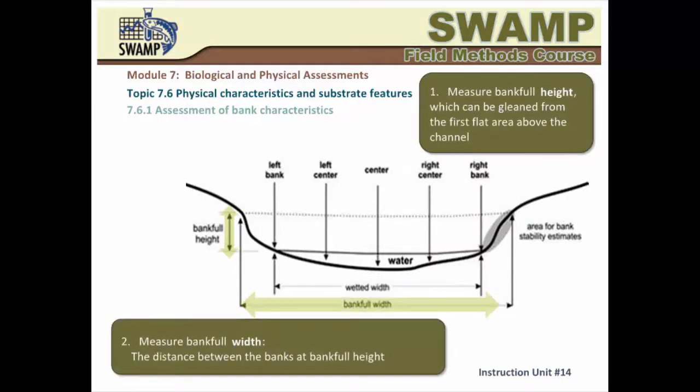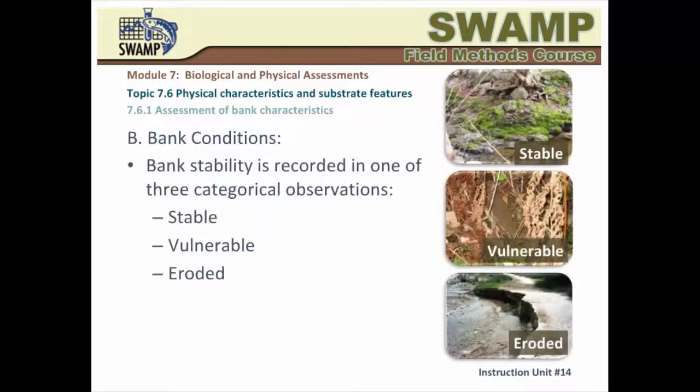Once you find the bankfull height, you can conduct the measurements of bankfull height and width. The condition of the bank in terms of stability is recorded in one of three categorical observations: stable, vulnerable, or eroded. It is assessed at the cross-section that includes the transect. Stable banks are often made of bedrock; strong, mature vegetation can also stabilize banks and prevent erosion. Stream banks are vulnerable if the vegetation cover is incomplete or easy to remove. Eroded banks are characterized by a wall of bare soil or sediment deposits that remained after adjacent materials have been washed away.